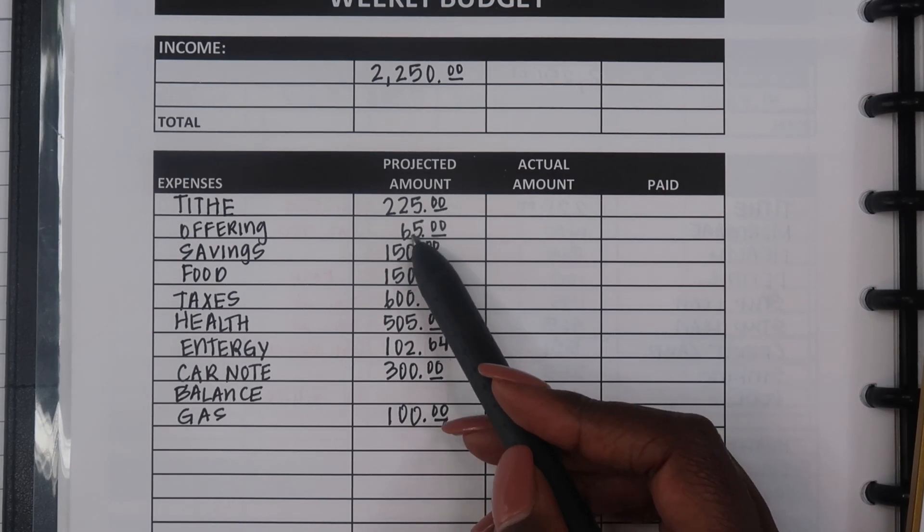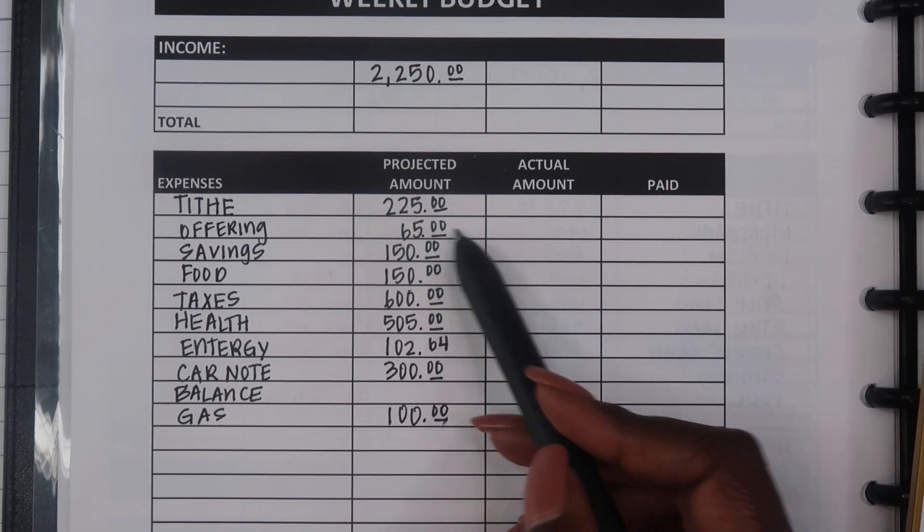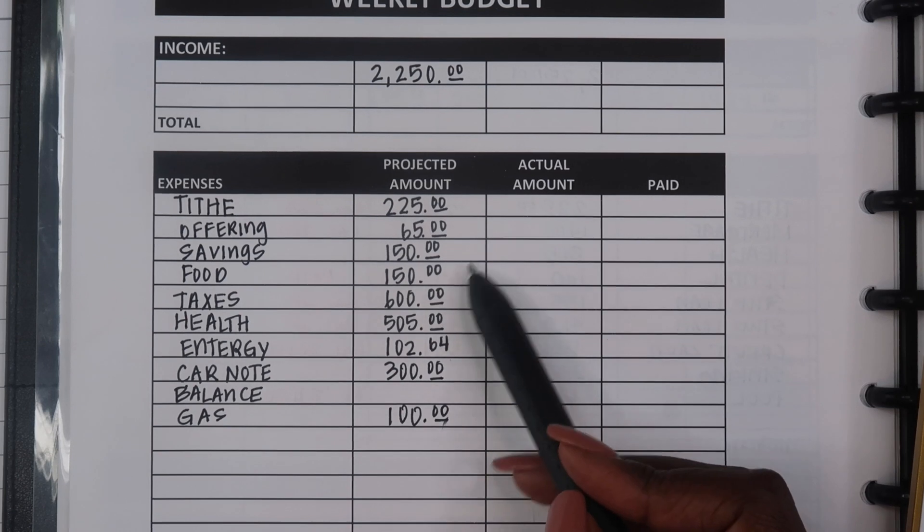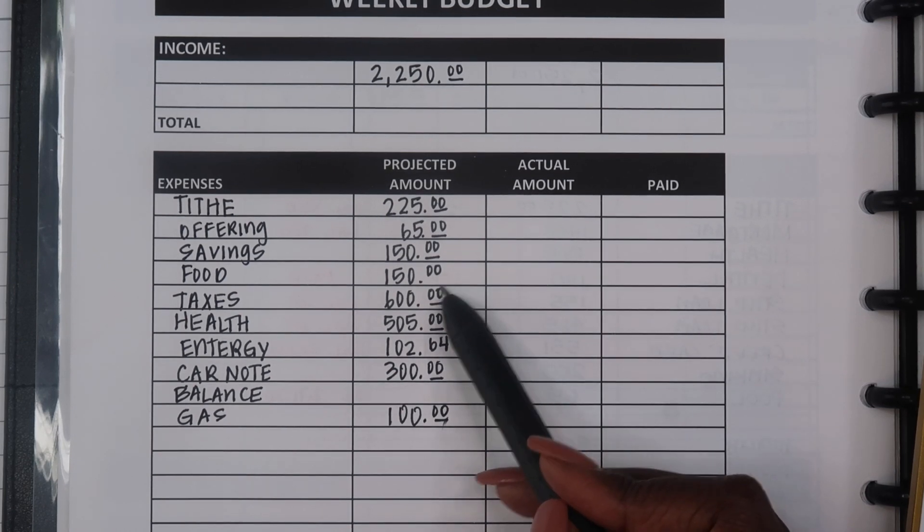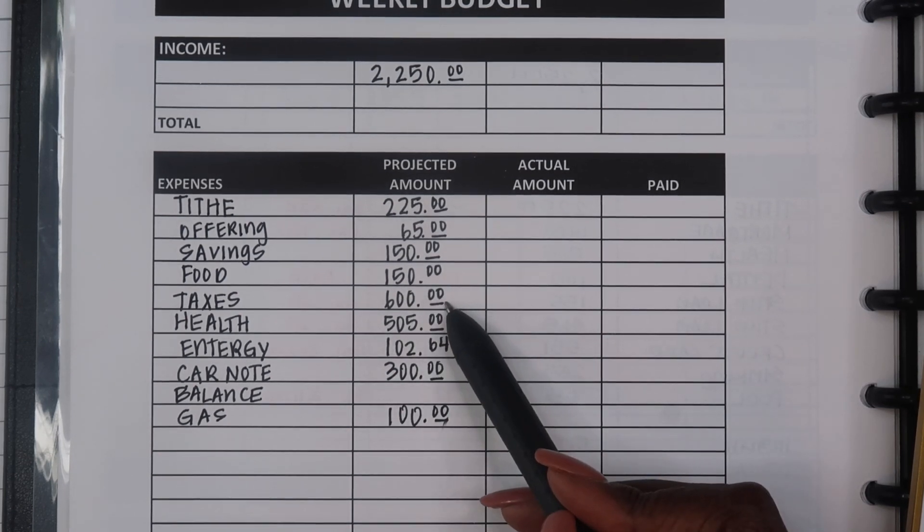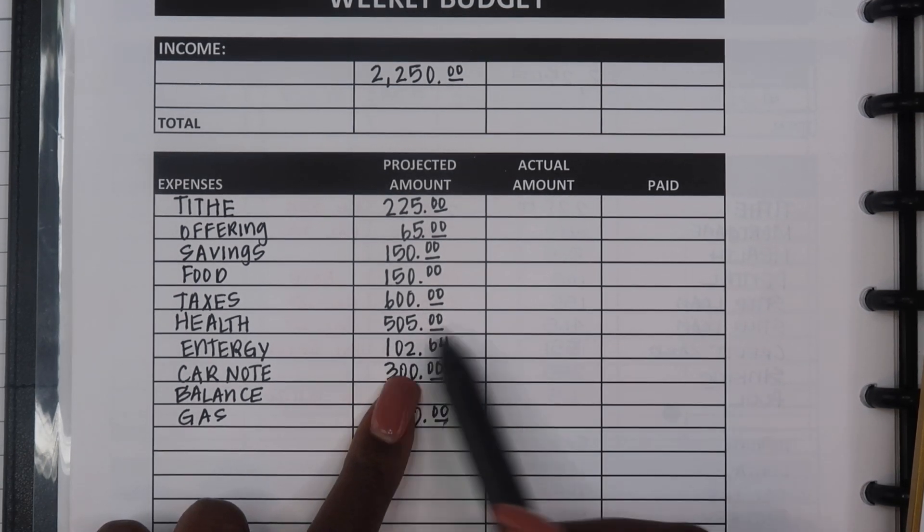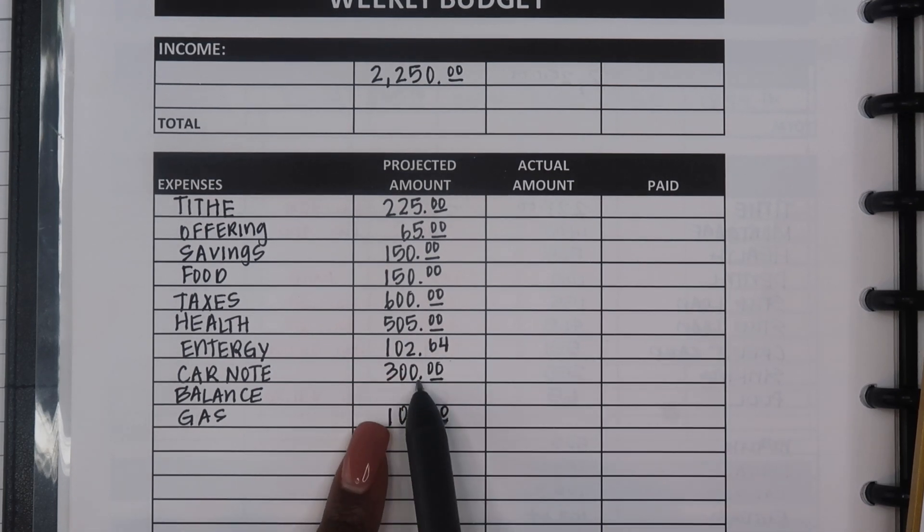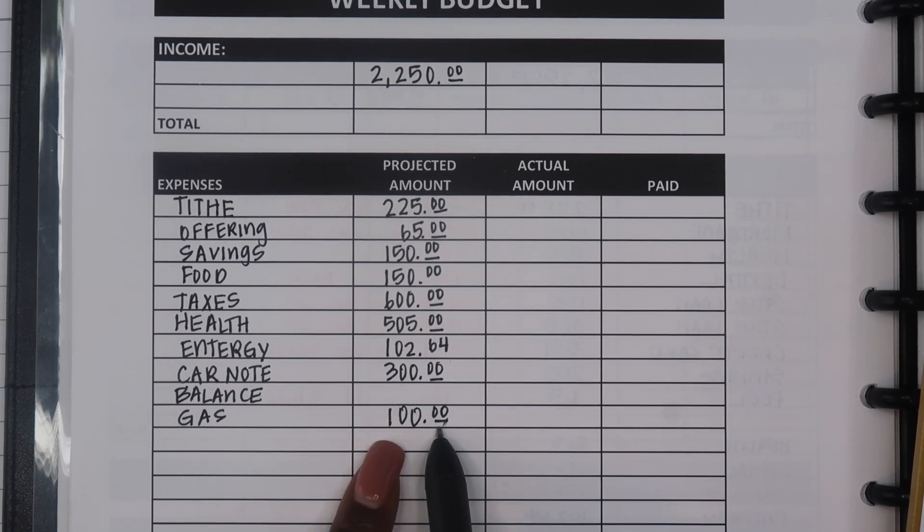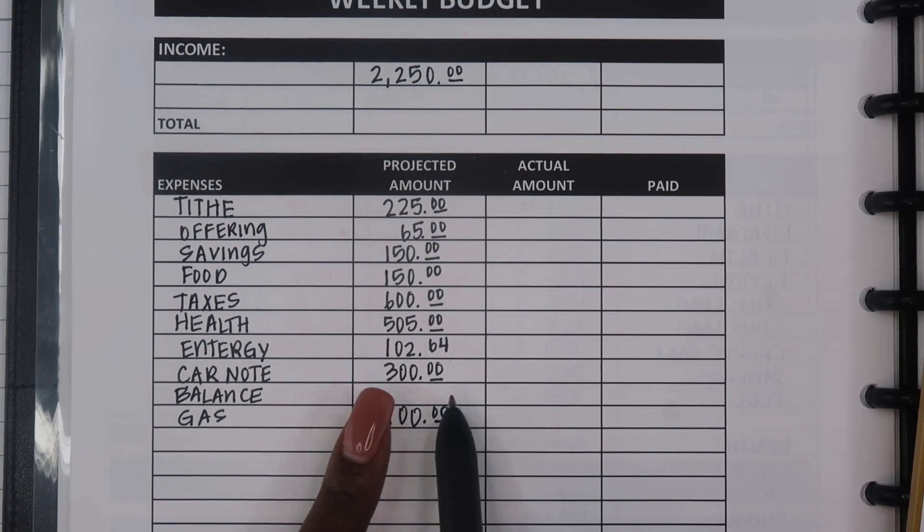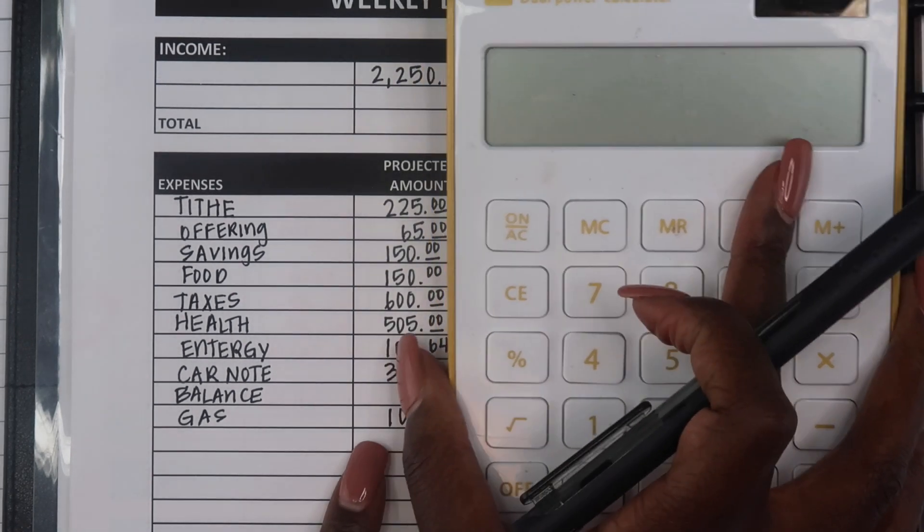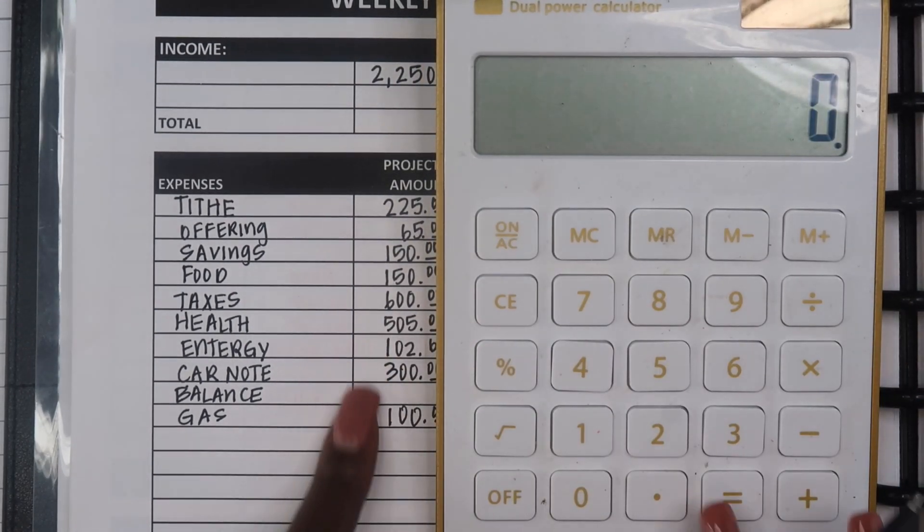So I've added in our tithe, offering, savings, food budget which is $150, taxes because I could not change that until next month, the health insurance is $505, energy is $102, the car note $300, and then I put $100 down here for gas. The balance which will stay in the account will go on this line here.